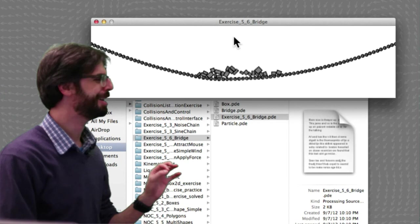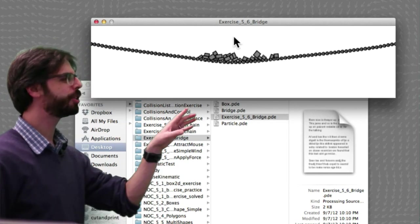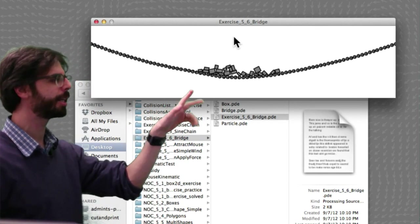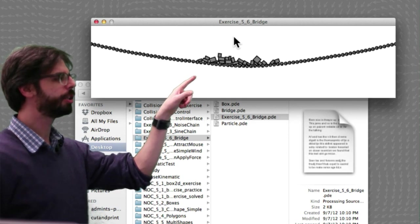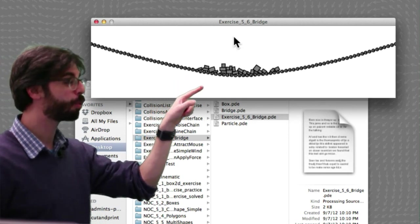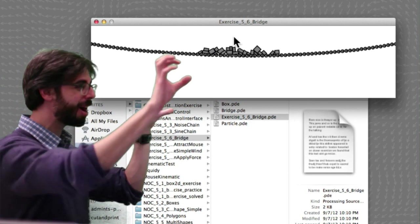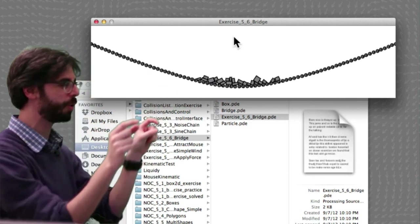Hi, I'm tacking this on to the distance joint. I forgot there is also an example, there's an exercise in the book, exercise 5.6, which describes how you can make a bridge by connecting a lot of objects, all connected with lots of little distance joints between them.